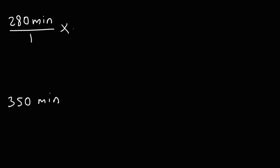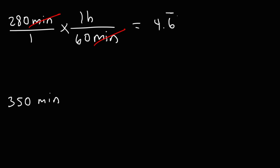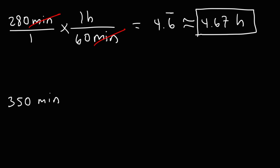Following the same setup — there are 60 minutes in one hour — set it up so the unit minutes cancel. This gives us 280 divided by 60, which is 4.6 repeating. We can round that to about 4.67 hours. That's the answer for the first example.